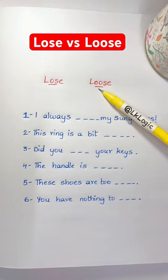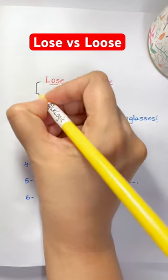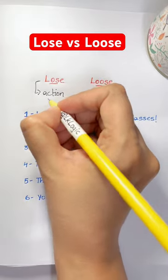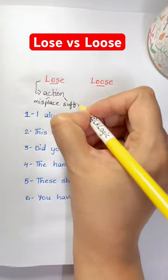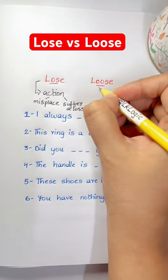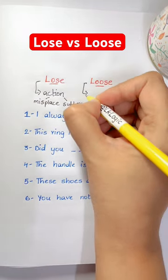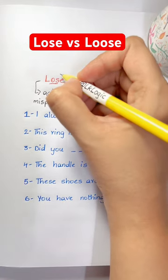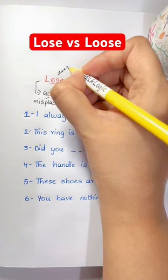Lose or loose — what's the difference? Lose with one O is a verb: if you lose something, you don't know where it is, like you misplace something or suffer a loss. On the other hand, loose with two O's is a description — an adjective — that describes something that's not tight.